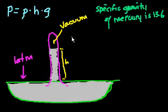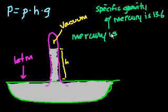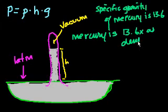So all that means is that mercury is 13.6 times as dense as water.